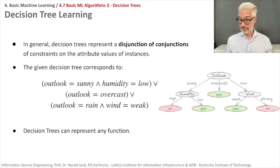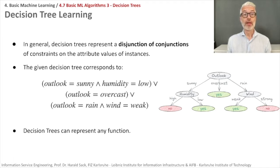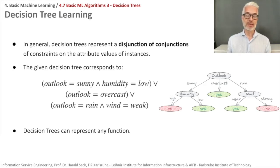Decision trees have been used for a long time in computer science. With a decision tree, you can compute any kind of function, because a decision tree can also be represented as a disjunction of conjunctions. For example, our tennis decision tree corresponds to: outlook=sunny AND humidity=low, OR outlook=overcast, OR outlook=rain AND wind=weak. You simply follow the paths that lead to true leaf nodes to arrive at this function. So decision trees can represent any function.